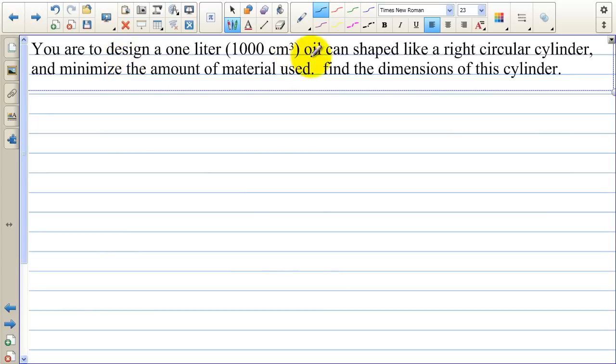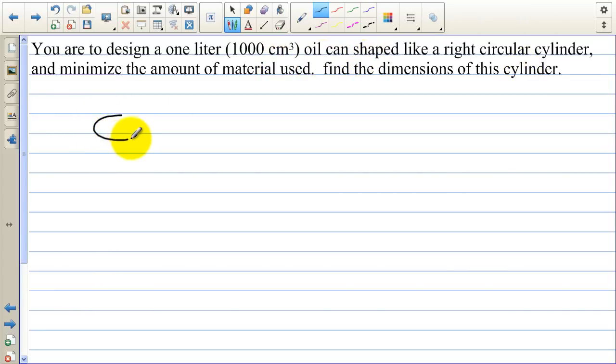You are to design a one liter oil can shaped like a right circular cylinder and minimize the amount of material used. Find the dimensions of this cylinder. So we're looking at a cylinder here. And we have a radius and a height.